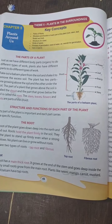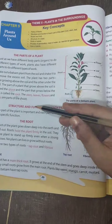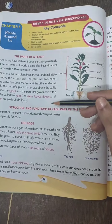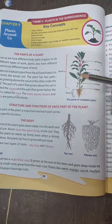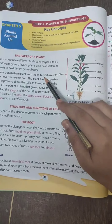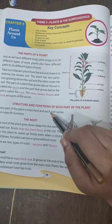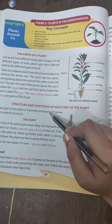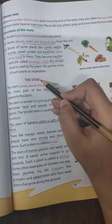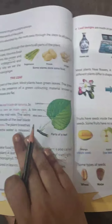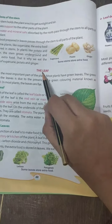In the previous class we studied about parts of the plant and the structure and function of each part, including the root and the stem. Today we will continue this chapter and study about the leaf.